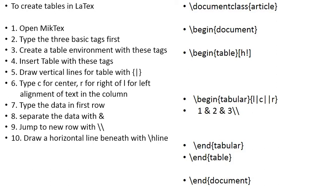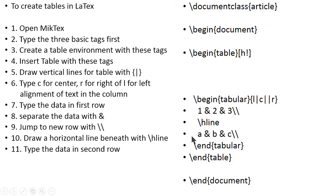These two backslashes mean we are starting a new row. After each row, if you want to draw a horizontal line as seen in most tables, you can use the \hline command. If you want two lines, type \hline twice. So after \hline, type the data for the second row. Here we type a, b, and c with ampersands and double backslashes. A will be left-justified, b center-justified, and c right-justified.